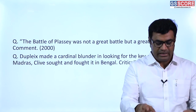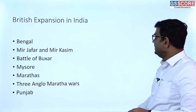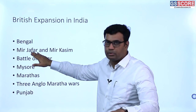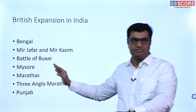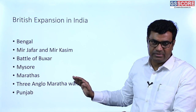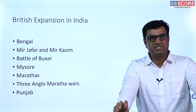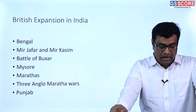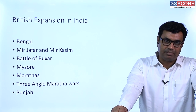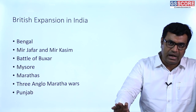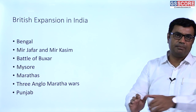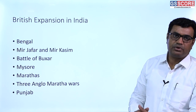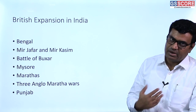Moving on to the next topic: British expansion in India. After defeating Siraj ud-Daulah, Mir Jafar became Nawab of Bengal, ruling only from 1757 to 1760. Mir Qasim became the next Nawab but was removed in 1763 as he couldn't be controlled. Mir Qasim then made a triple alliance with the ruler of Awadh and the Mughal Emperor. These three powers clashed with British at the Battle of Buxar in Bihar in 1764, which proved highly decisive — even more so than the Battle of Plassey.